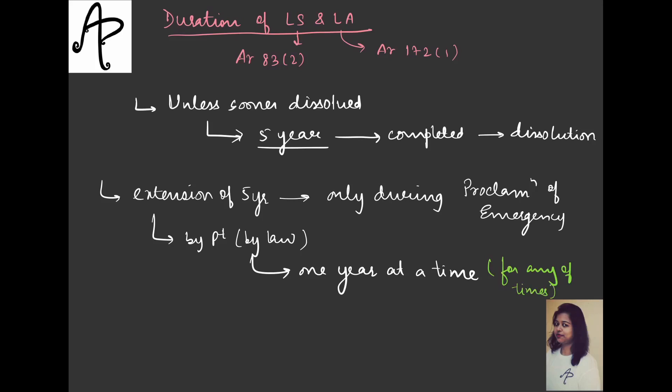There is a historical example of this. During the Emergency, acts were passed extending the Lok Sabha from 1976 to 1977, and then further from 1977 to 1978. However, in 1977 it got dissolved midway. So it was extended for 5 years, 10 months, and 6 days - it was supposed to end in 1976 only but got extended. This is how the extension happened.